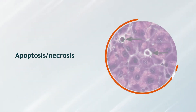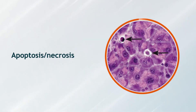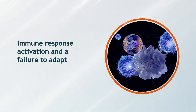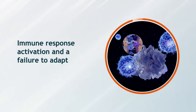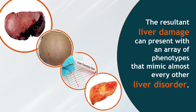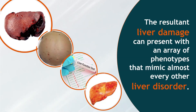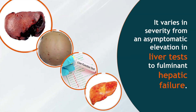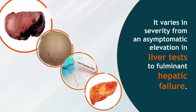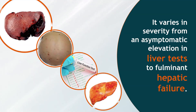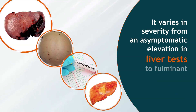These cellular events include apoptosis, necrosis, haptenization, immune response activation, and a failure to adapt. The resultant liver damage can present with an array of phenotypes that mimic almost every other liver disorder. It varies in severity from an asymptomatic elevation in liver tests to fulminant hepatic failure.